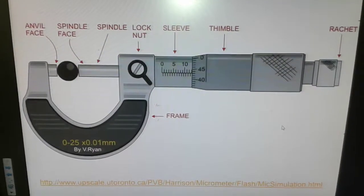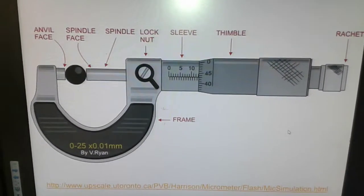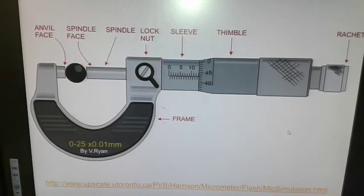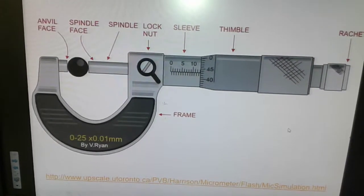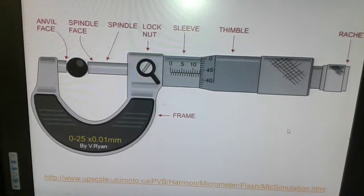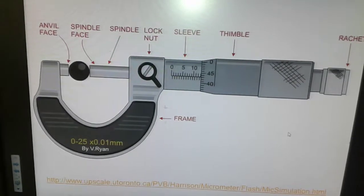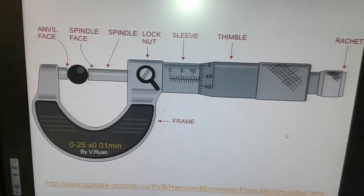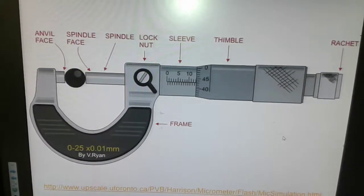Moving on to the micrometer screw gauge, which has many parts: the anvil face, the spindle face, the spindle, the lock nut, the sleeve, the thimble, and the ratchet.